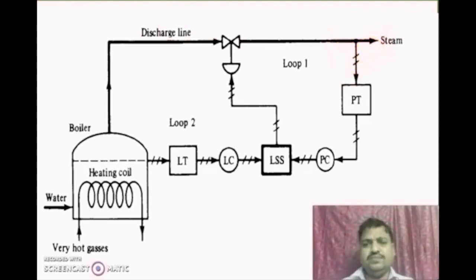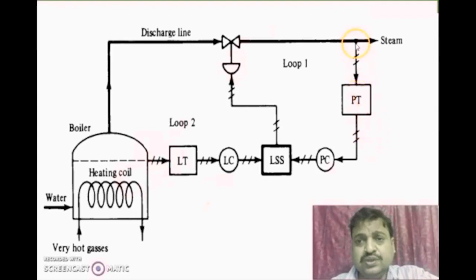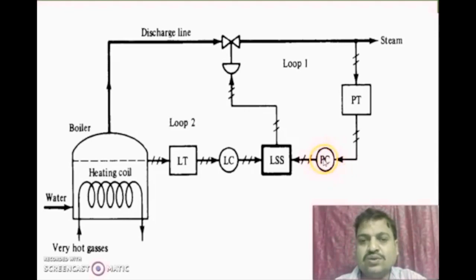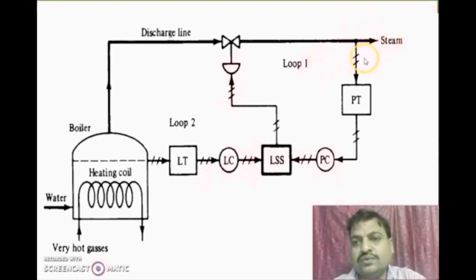For that, we can use an ordinary feedback mechanism. In the feedback mechanism, we measure the pressure or flow rate of the steam with the help of a sensor. We compare the measured value with the set point given by the designer, which generates an error. That error goes to the pressure controller — a normal feedback controller. Based on the error, the pressure controller will regulate the outlet flow rate. For easy understanding, assume that we need 10 liters per hour, or 10 PFA of steam.